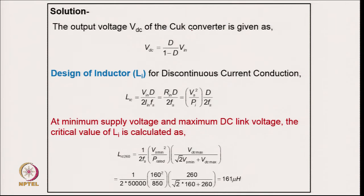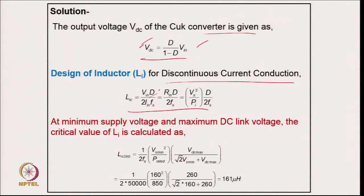Coming to the numerical part: the output voltage of the Cuk converter uses the buck-boost relation between average input voltage after the diode rectifier and the DC output. For the inductor designed in discontinuous mode, the applied voltage during the on-period is V_in × D, and the ripple current goes from 0 to twice the peak input current, making the ripple very large. Calculating the boundary condition gives 161 μH for rated conditions.